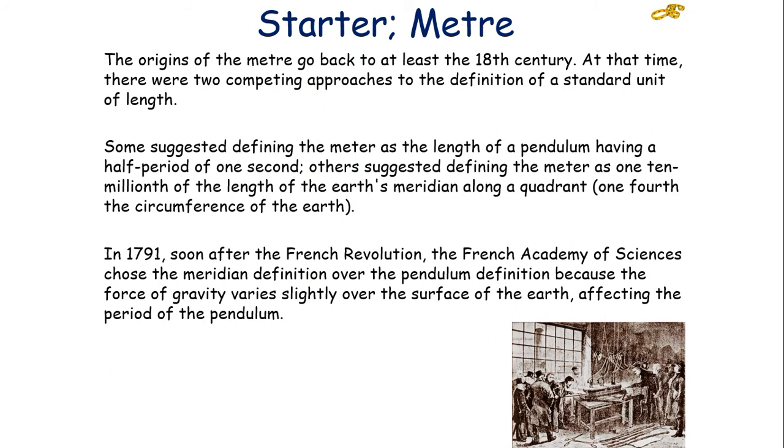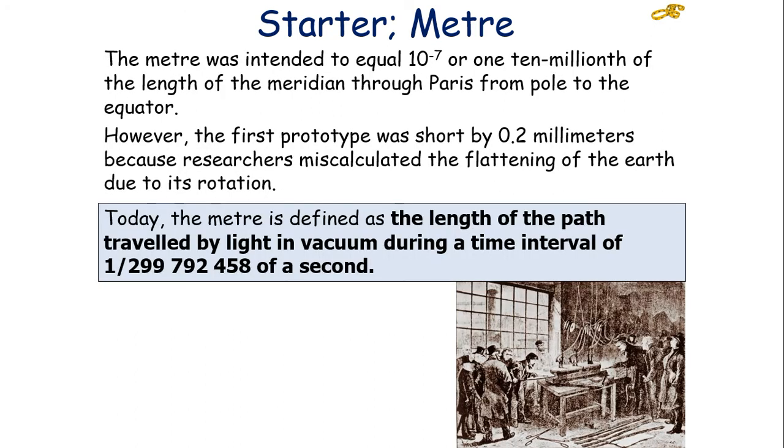The origin of the metre goes back to the 18th century. At that time, there were two competing approaches to the definition of the standard unit of length. Some suggested defining the metre as the length of a pendulum having a half period of one second. Others suggested defining the metre as one ten millionth of the length of the Earth's meridian along a quadrant, which is one-fourth the circumference of the Earth. In 1791, soon after the French Revolution, the French Academy of Sciences chose the meridian definition over the pendulum definition because the force of gravity varies slightly over the surface of Earth, affecting the period of a pendulum.